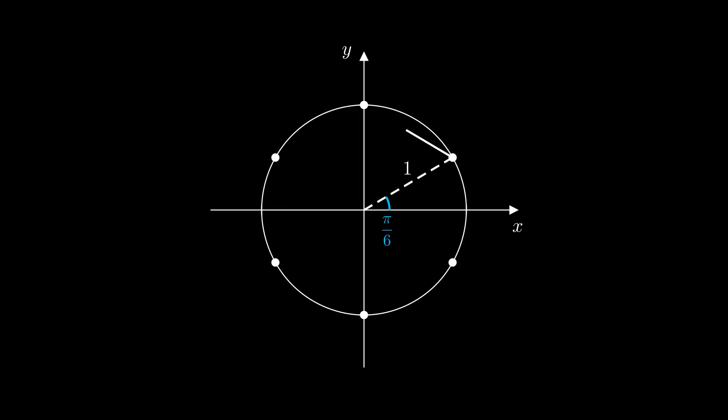Now look at this regular hexagon. It's inscribed in the unit circle, so the distance from the center to the vertex is 1, and the sine of π/6 is half the side length of the regular hexagon.